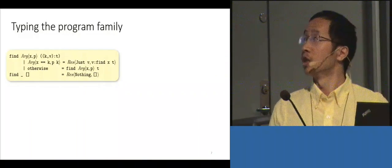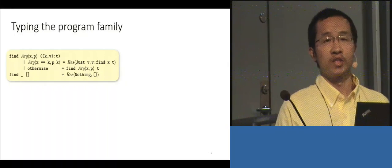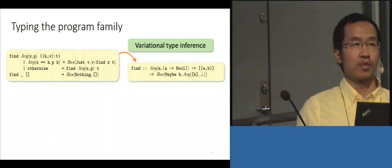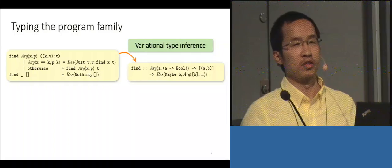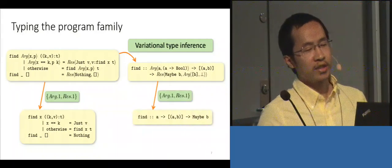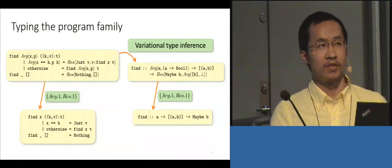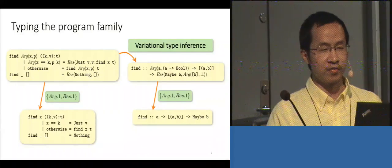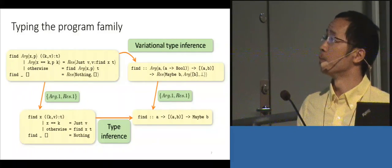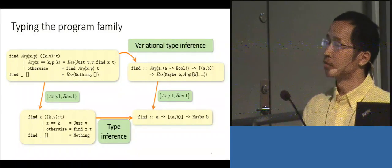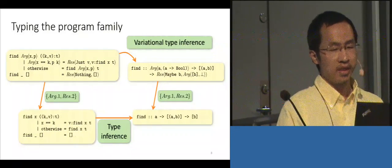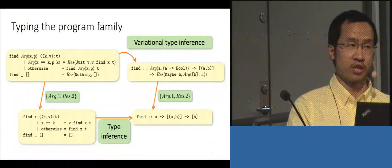To see the advantage of variational analysis, we look at variational type inference, which can be directly applied to this variational program and yields a variational type. This is not surprising because different selections result in different plain types. If we select the corresponding selections from both the variational program and variational type, we get a single program of that particular type. Applying type inference, we find the types converge, showing we can know properties of single programs without generating them and applying plain analysis.